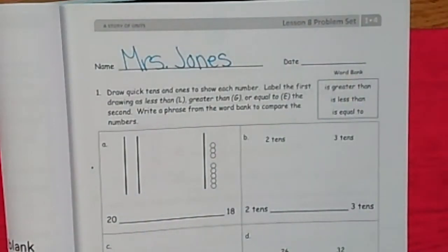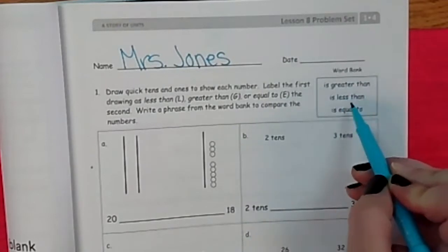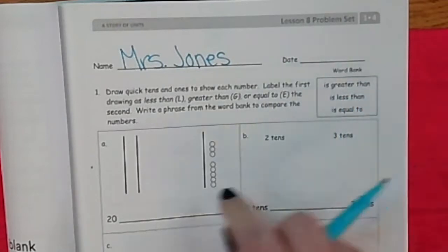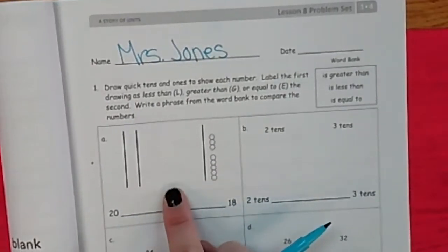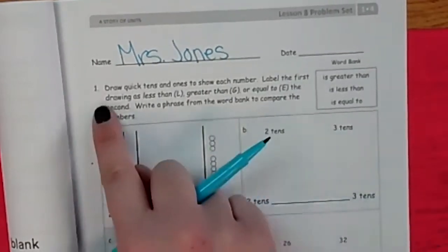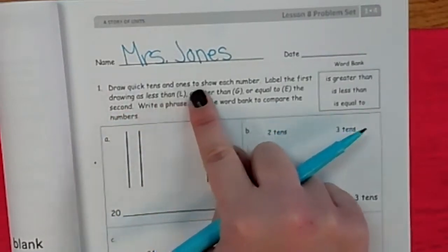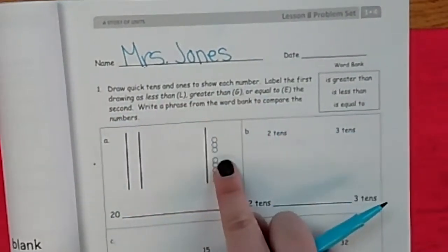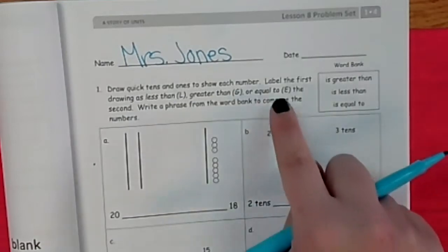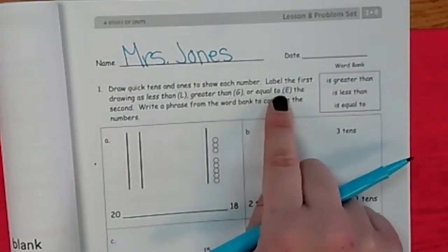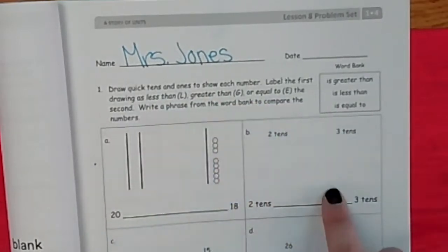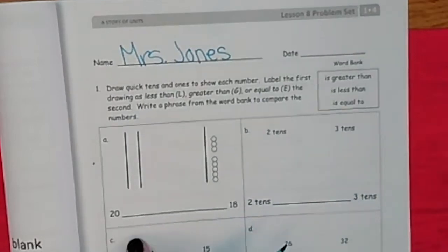So today it says, think of these words, greater than, less than, or equal to, right? And we're going to look at them. Some of them already labeled them for us because they're so nice to us. But we still count because mathematicians like to check their work. And in the middle, we write like L for less than or greater than. So here it is. Here's the directions. Draw quick tens and ones to show each number. Here we're going to actually have to draw. Label the first drawing as less than, greater than is G, or equal the second. Write the phrase on the word banks to compare. So here we go.